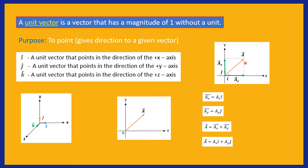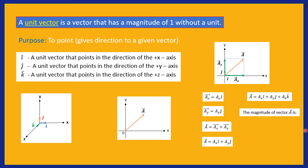If vector A also has a Z component, in general we can write A = AX·i-hat + AY·j-hat + AZ·k-hat. The magnitude of this vector is given by the formula: A equals the square root of AX squared plus AY squared plus AZ squared.